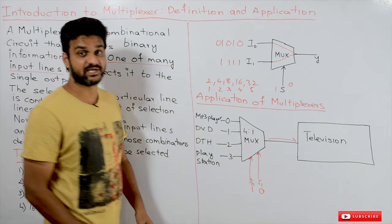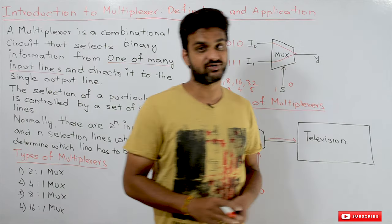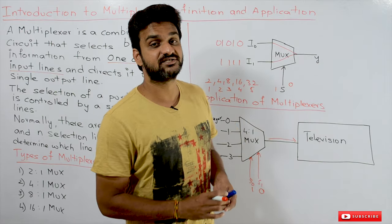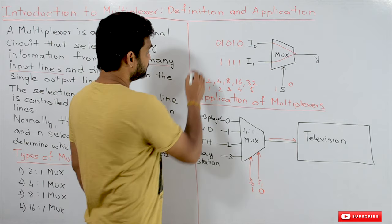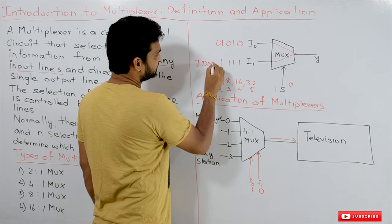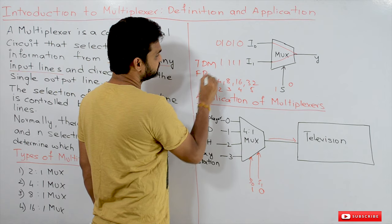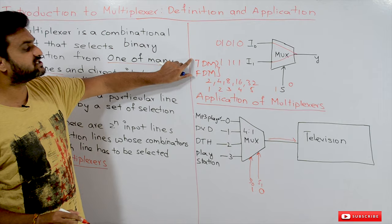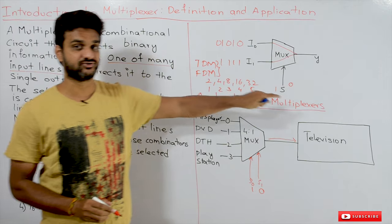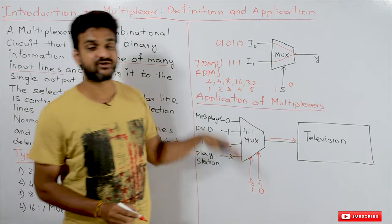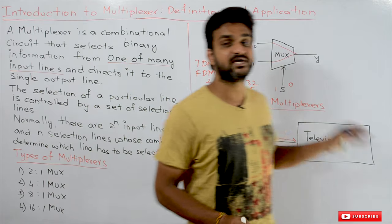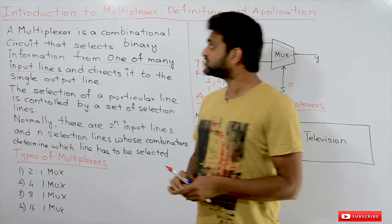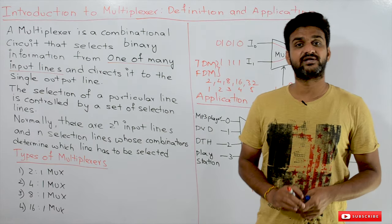In engineering, multiplexers are used in communication systems. Key concepts include time division multiplexing and frequency division multiplexing. These are some of the important applications where multiplexers are used in communication systems.